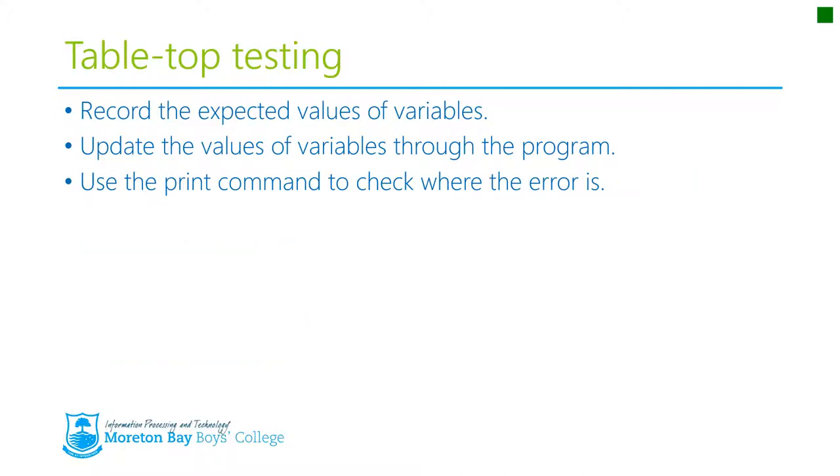So tabletop testing is quite simple. First off you record all the expected values of the different variables throughout the actual program and how they will change. Then you manually run the actual program and you update the values of the variables throughout in your table. You sit down and you make the changes as it be.